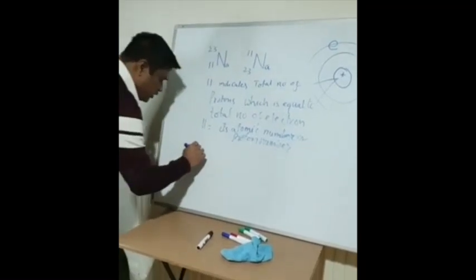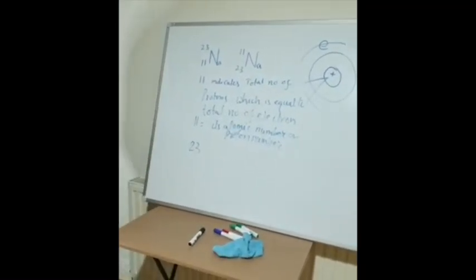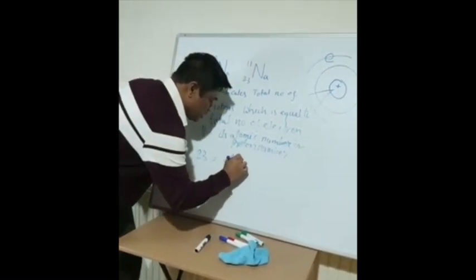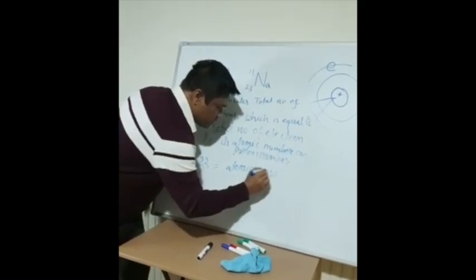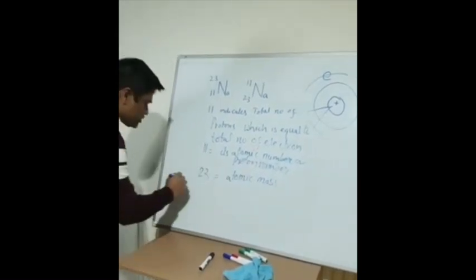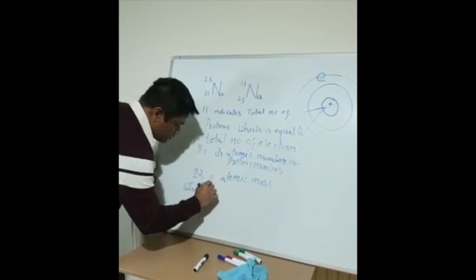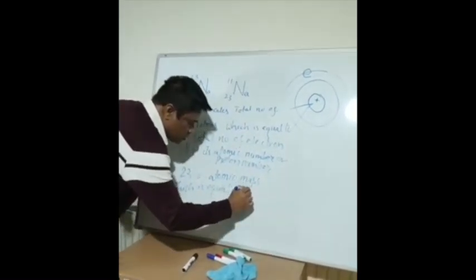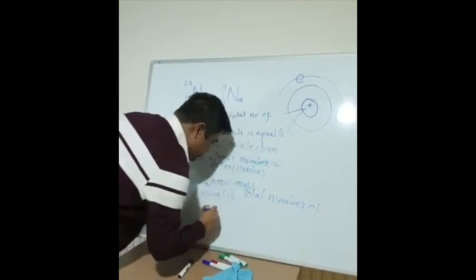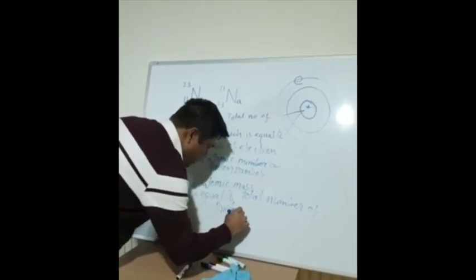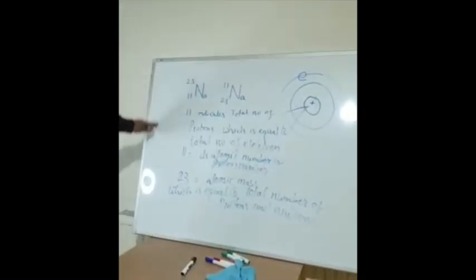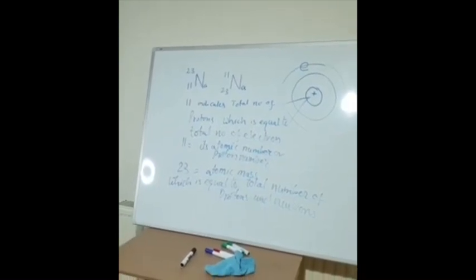Now look at 23 — the bigger number always represents the atomic mass. Atomic mass equals the total number of protons plus the total number of neutrons. Please copy everything down so we can move to our next point.